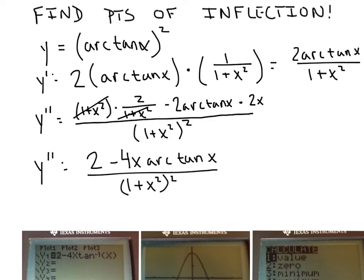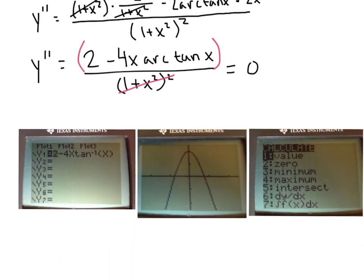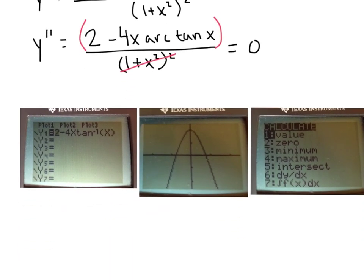Setting this second derivative equal to 0, I cross-multiply and the denominator fades away. So I'm really just setting the numerator 2 − 4x·arctan(x) equal to 0. I'll grab my calculator — I've entered this numerator into y-equals. Note that the calculator prints 'tangent inverse of x' rather than 'arctan,' but it's the same thing. I did zoom standard and then zoom in, and if I'm going too fast, hit pause to keep up with your calculator.